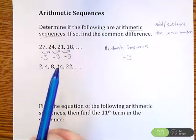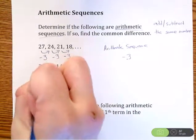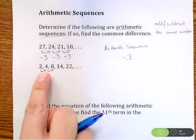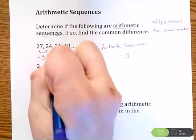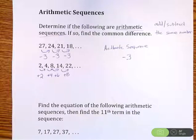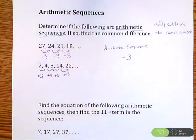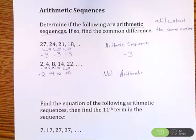For the next one: 2, 4, 8, 14, 22. We're looking for an arithmetic sequence, so we're looking for adding or subtracting. From 2 to 4, we're adding 2. From 4 to 8, we're adding 4. From 8 to 14, adding 6. From 14 to 22, adding 8. We're adding every single time, but the issue is it's not the same number — we're adding 2, then 4, then 6, then 8. Because it's not the same number, it is not arithmetic. There's no common difference.